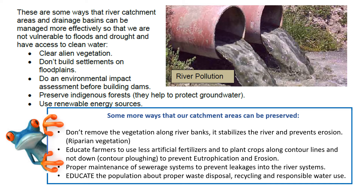Some of the ways that catchment areas can be managed: clear away the alien vegetation; don't build settlements on the floodplains — they're prone to flooding, and pollution from these settlements can enter the water systems. Conduct environmental impact studies before building dams. Preserve our indigenous forests because they protect the groundwater, maintain the soil, and prevent erosion. And as far as possible, use renewable energy sources.